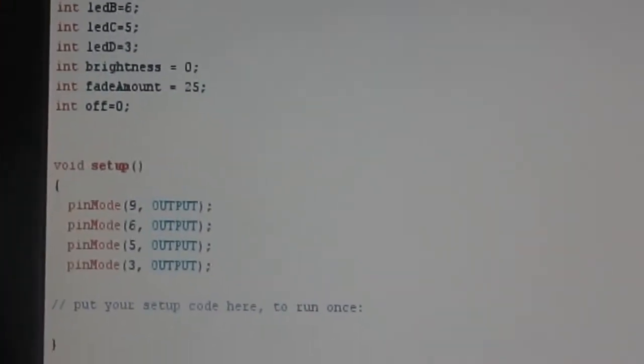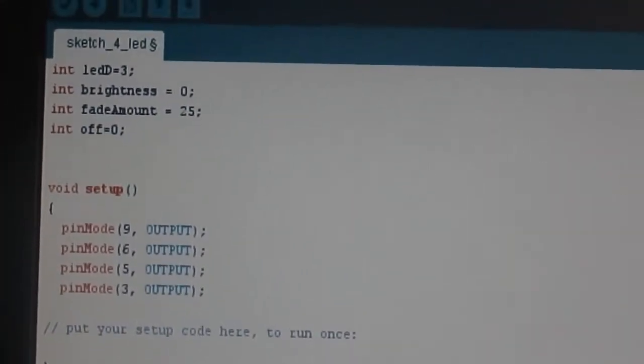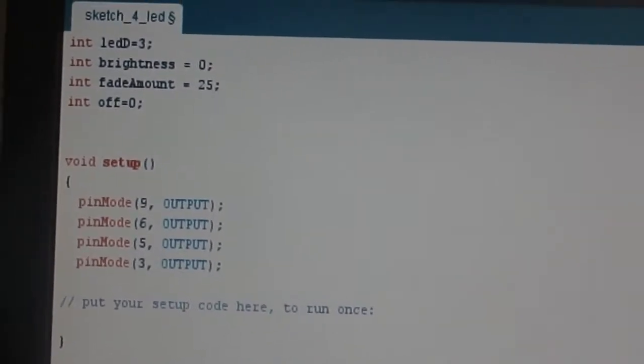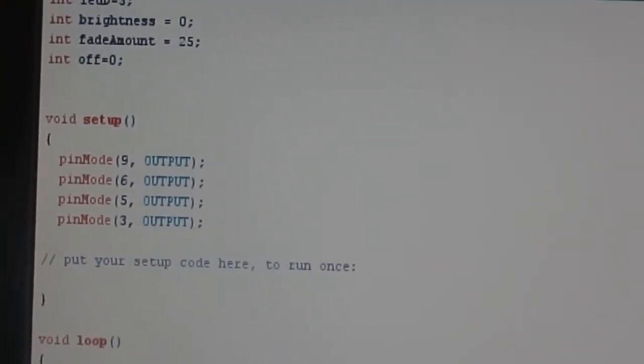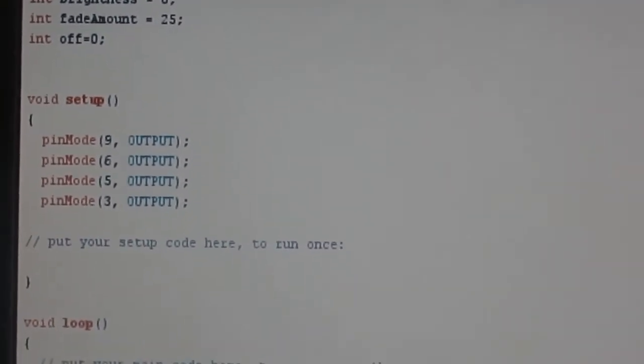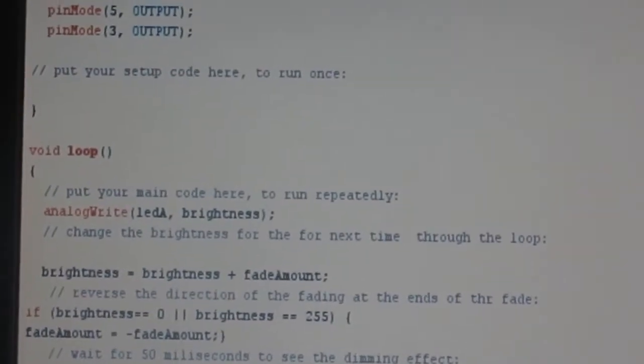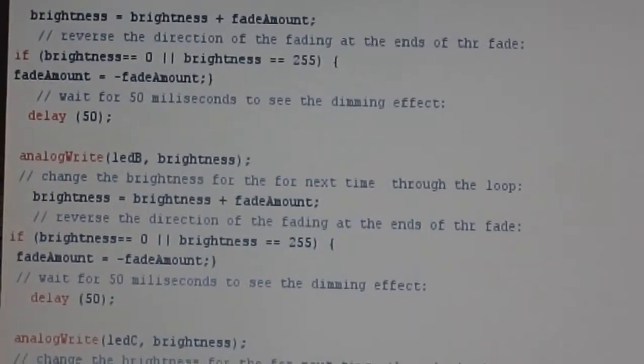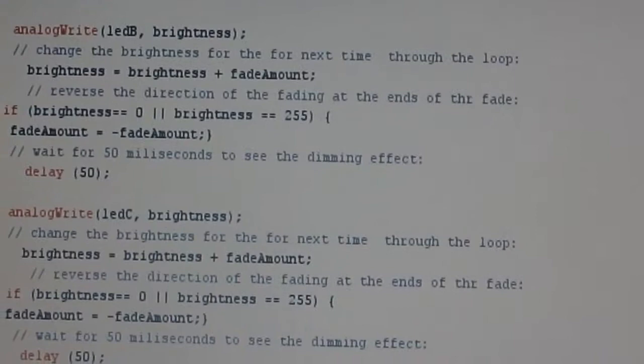These are the codes for the LED. We have the B, the A, B, C, and D, and then we have the output, the pin codes, the analog write, the delays.